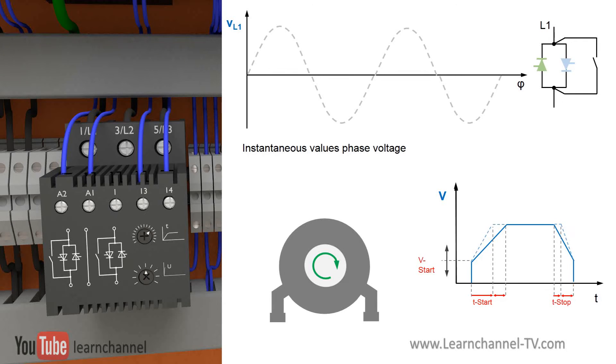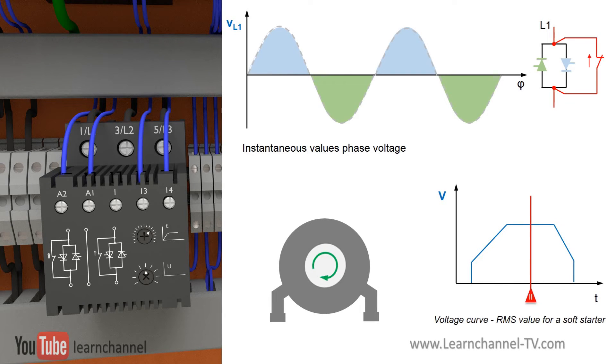The SCRs are only active during starting and braking. As soon as the start-up of the motor is finished, the SCRs are bridged by mechanical contacts to diminish the power loss of the soft starter.